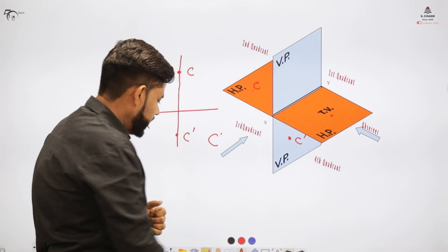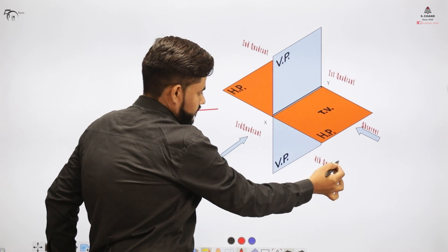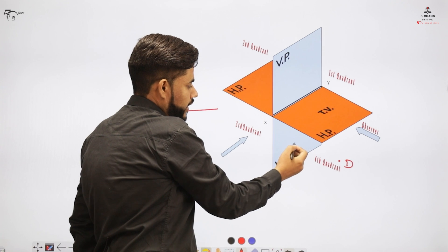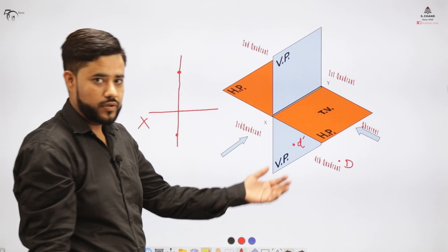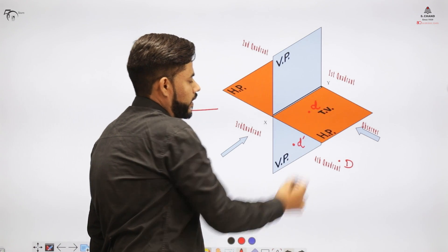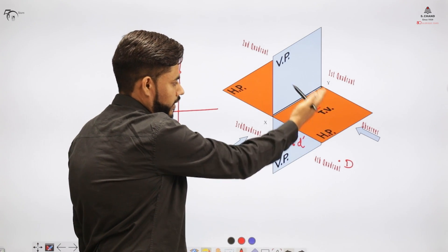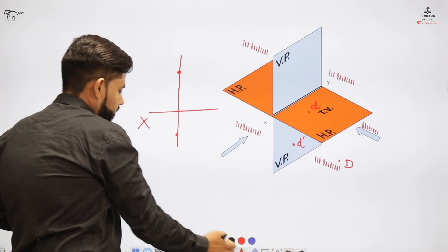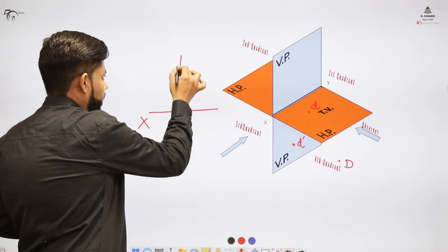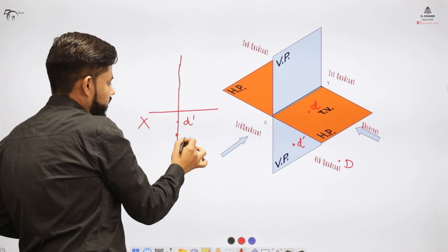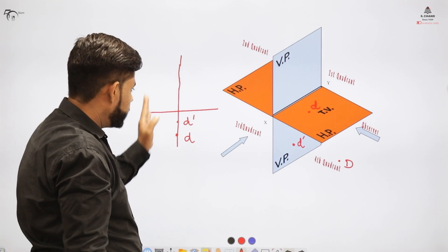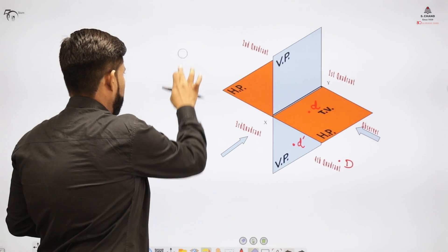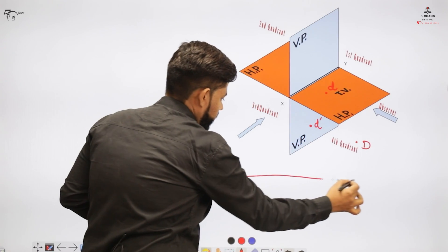With object 'd' in the fourth quadrant, throwing light gives the front view d-dash and the top view on the horizontal plane. When the horizontal plane is rotated 90 degrees clockwise, d and d-dash may overlap each other, similar to the second quadrant situation. This is the case of the fourth quadrant.